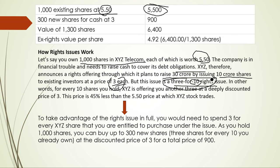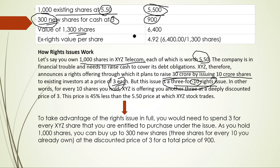So the calculation is: 1,000 shares divided by 10 equals 100, and 100 multiplied by 3 equals 300 shares. This means you are entitled to purchase 300 additional rights shares.